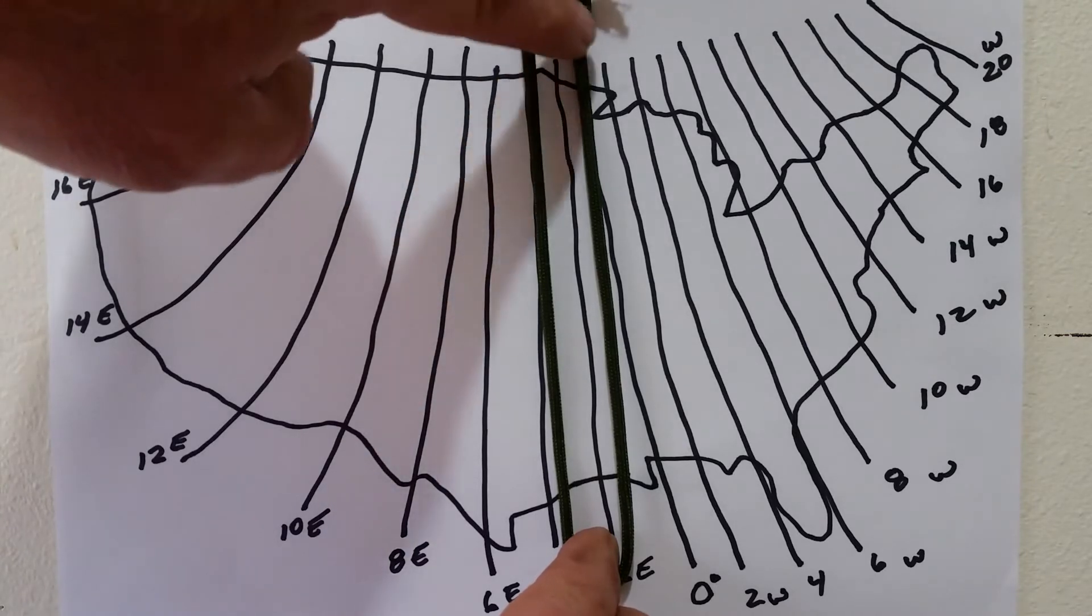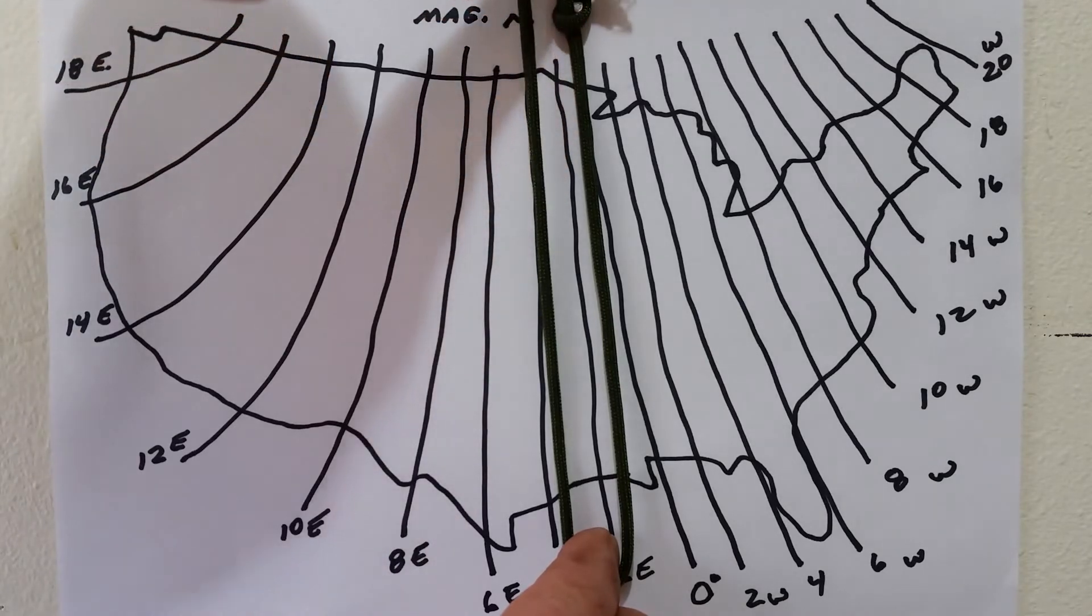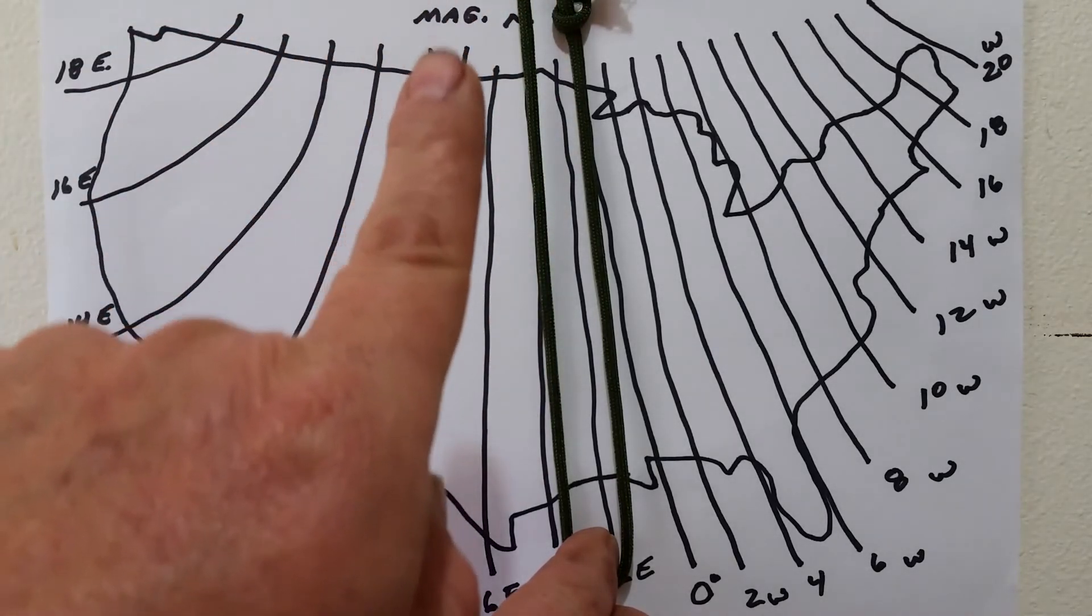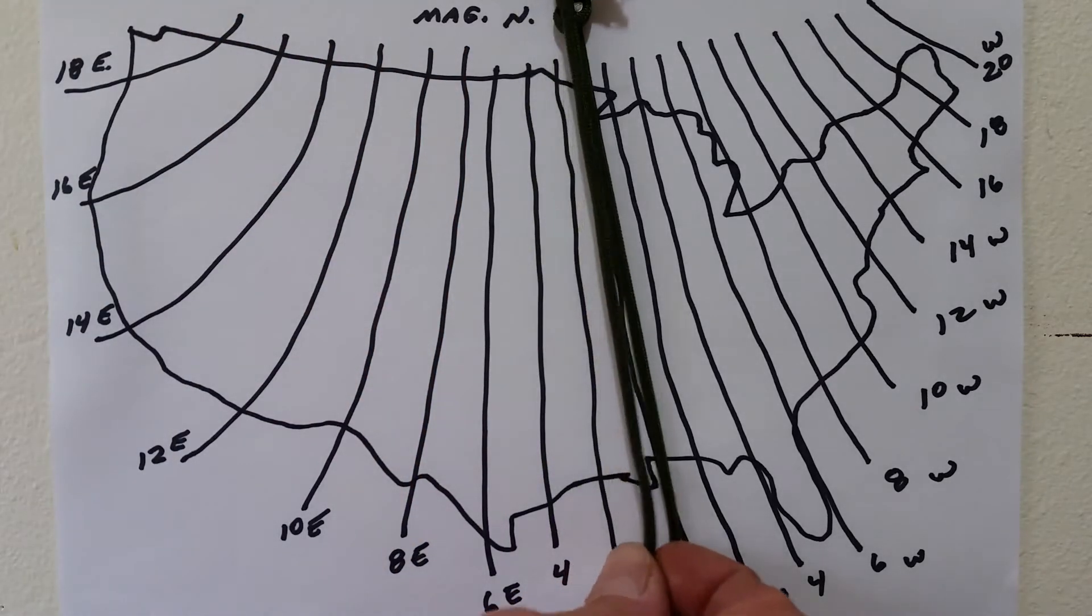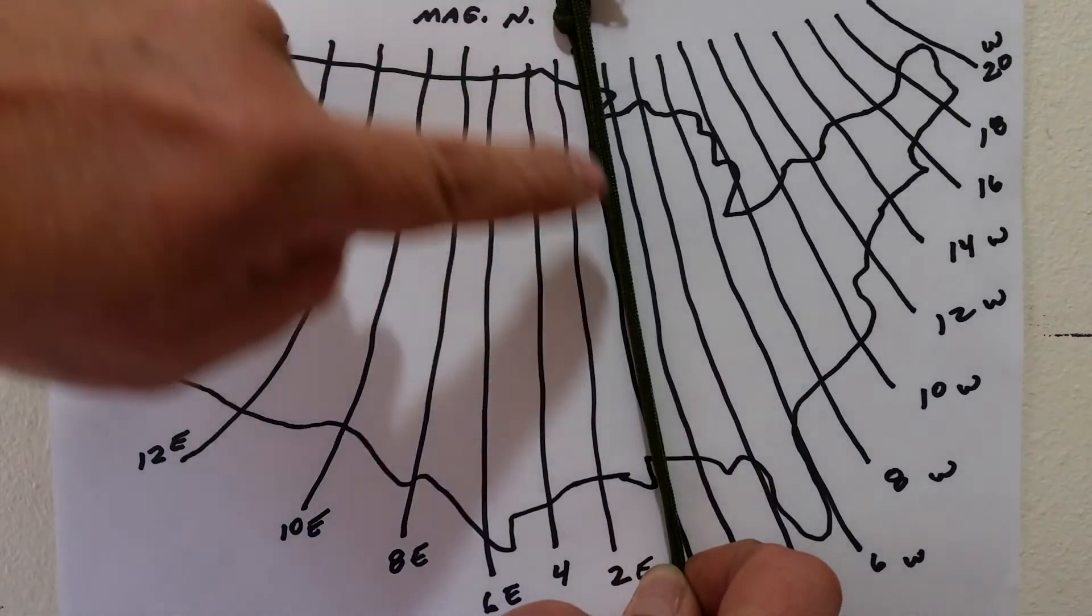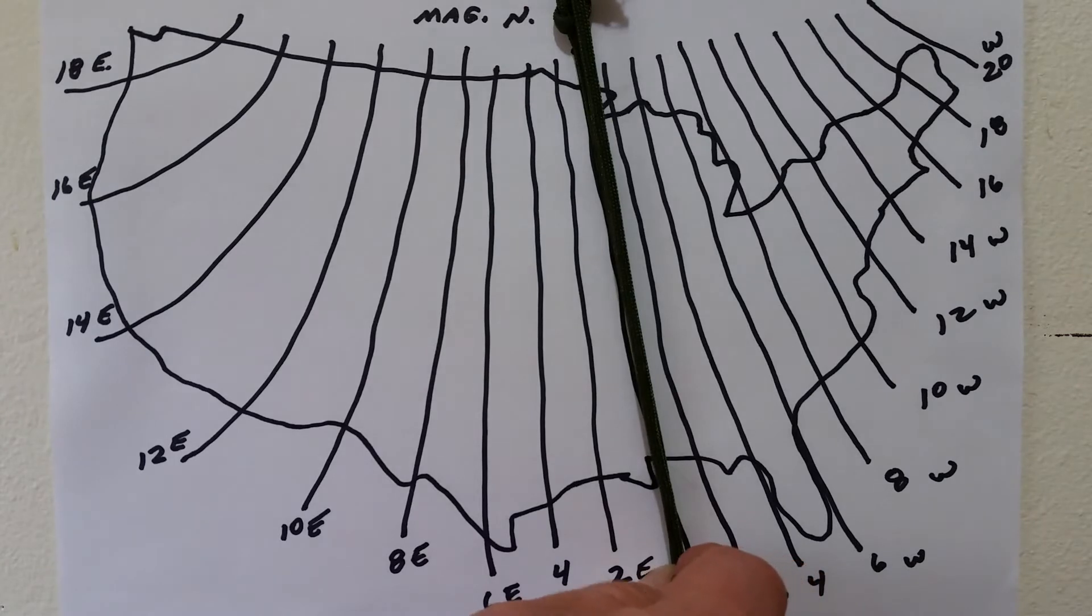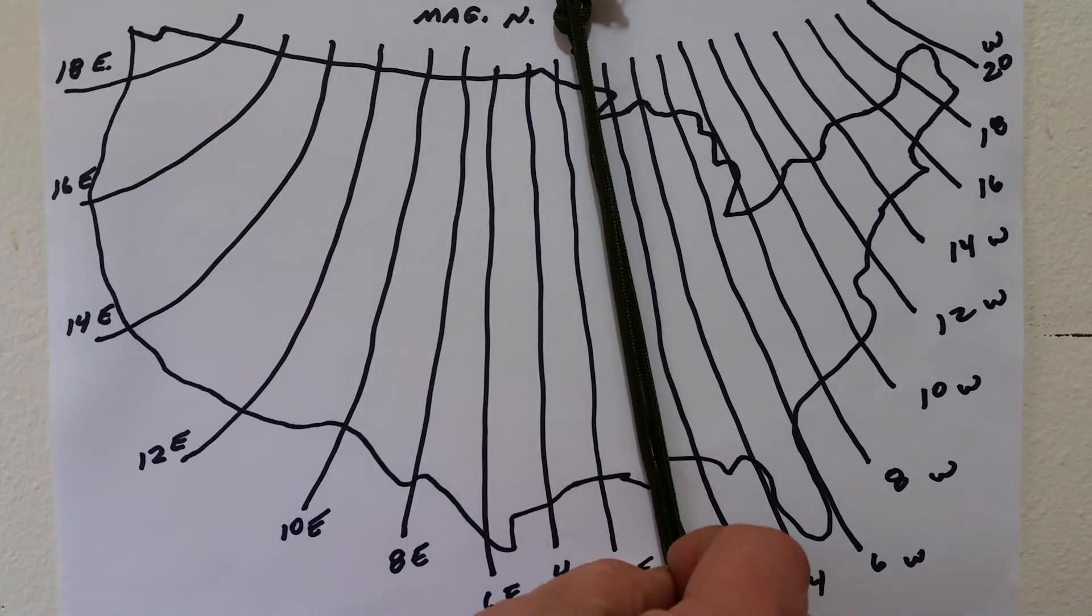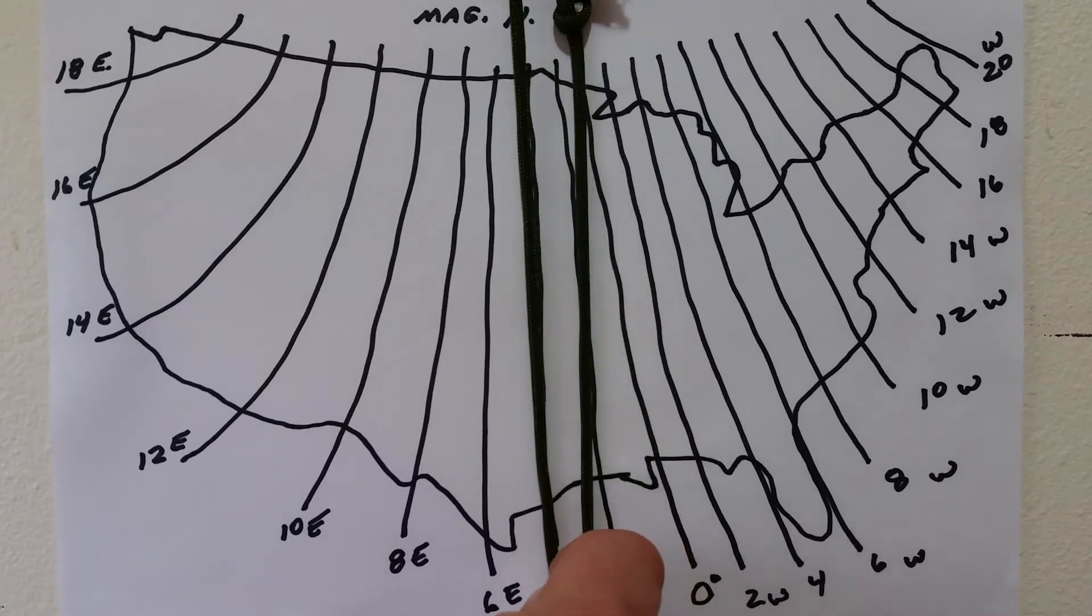So this is magnetic north, and way up here is true north, which is the north pole. So if we are on zero, you can see that everything lines up. As we move to the west and we have east declination, you can see how this is spreading apart: magnetic, true.